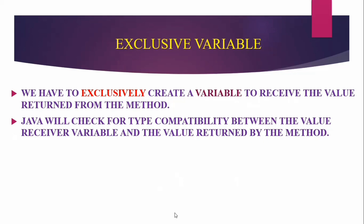Let's talk about the example program. The value returned by the method must be compatible with the data type of the value receiver variable. We have to maintain type compatibility — Java will check for type compatibility. There should not be any type mismatch.